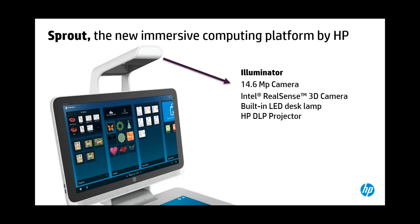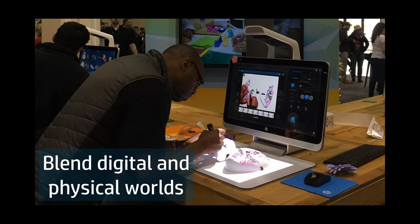Sprout is the new immersive computing platform by HP. What we have done is reinvent personal computing into what we call immersive computing. It's a high performance all-in-one machine — a full Windows 8.1 machine with a 23-inch full HD touch screen. It has all the elements of a high performance machine: an Intel i7 processor, 8 gigs of RAM, and an NVIDIA GPU.